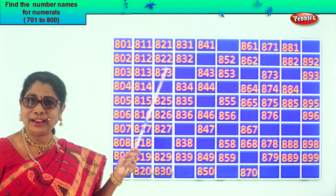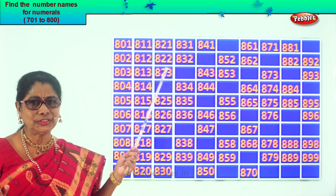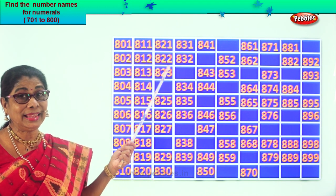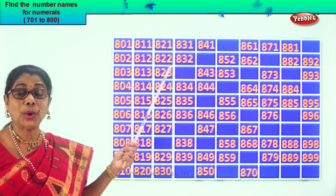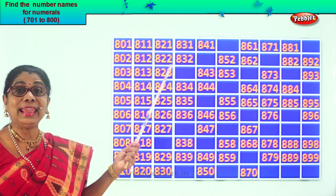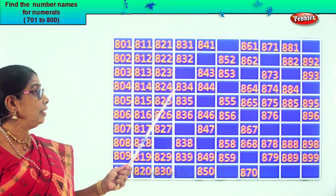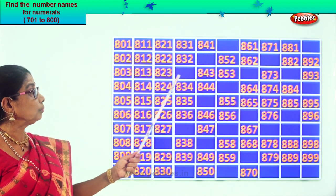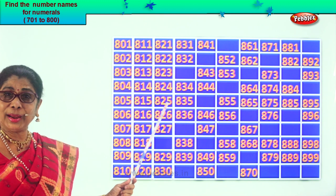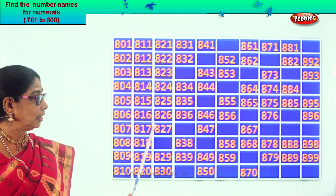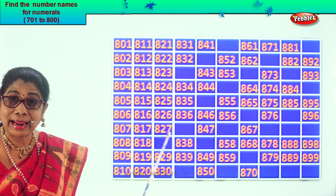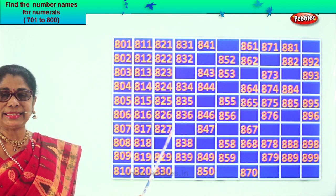After 3 comes 4 — after 23 comes 24. The missing number here is 824, then 825, 826, 827.